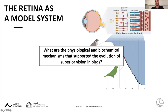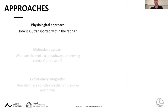These mechanisms may have supported the evolution of superior vision in birds and other visually high-performing animals. To understand this, my research has three layers: I want to gain information about the physiological mechanisms animals use to transport oxygen within the retina, gain a molecular understanding of these mechanisms, and investigate this in a comparative and evolutionary context.